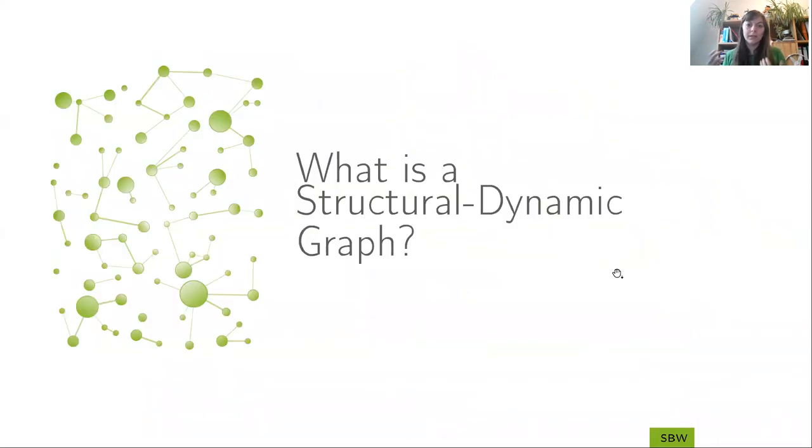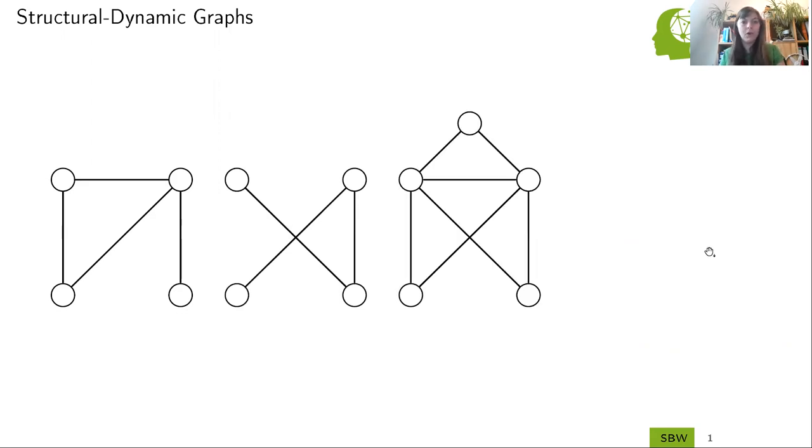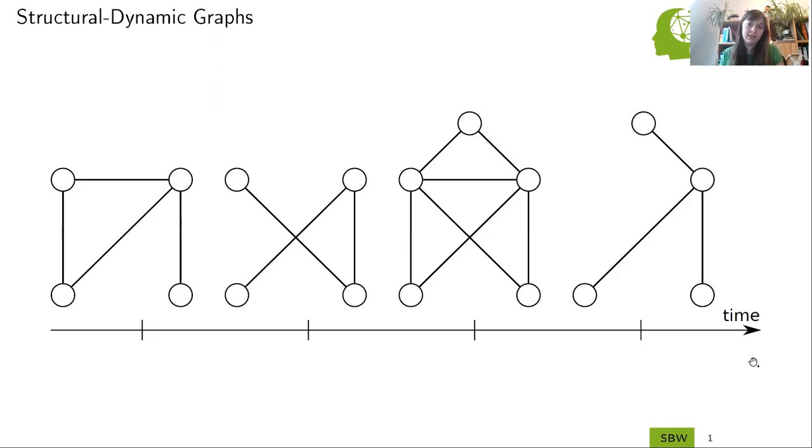To start with, what is a structural dynamic graph? Let me give you a short example. Imagine we have a graph with four nodes and four edges, and how can the dynamic on this graph look like? For example, the edges can be added or deleted over time, or even new nodes can occur or nodes can be deleted over time.